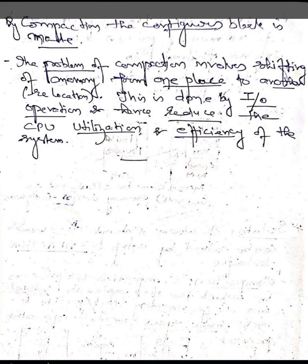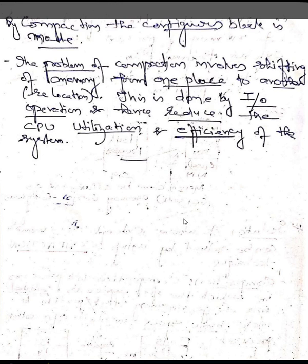Compaction reduces CPU utilization and efficiency because the whole process must be restructured again — search methods and location identification must restart. These are the basic points related to fragmentation, and this is one of the important segments of the university's question papers. Thank you.